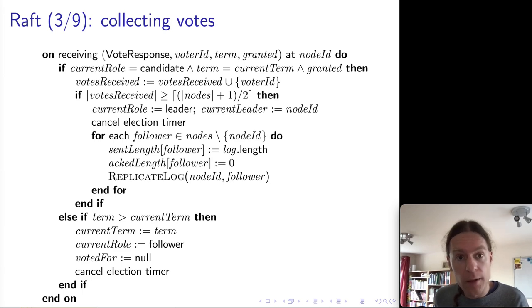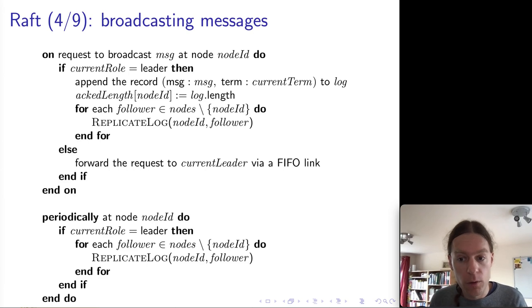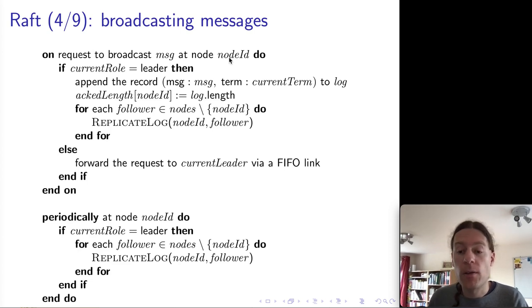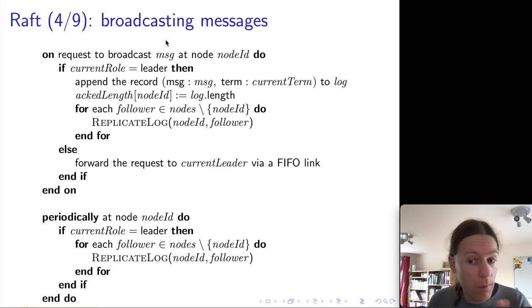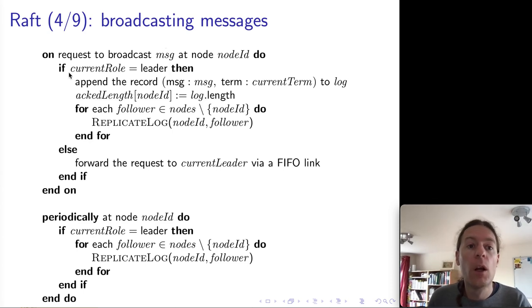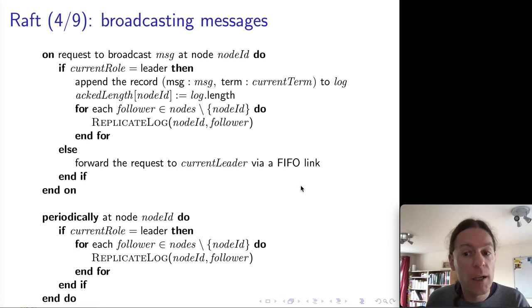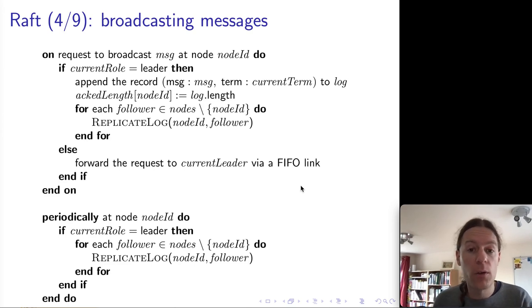Now that we have a leader, we can talk about the total order broadcast. A client can call a function to broadcast a message, and the order in which messages are delivered is exactly the log — that's the whole purpose of the log. Only the leader can add entries to the log. If the request to broadcast a message happens on a non-leader node, it has to be forwarded to the current leader via a FIFO link. Using a FIFO link here ensures we get FIFO total order broadcast, not just total order broadcast.